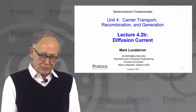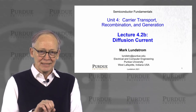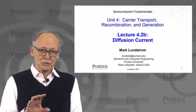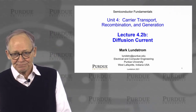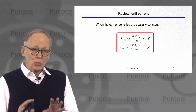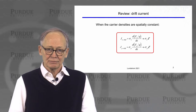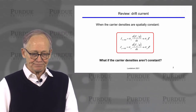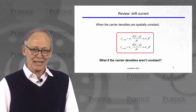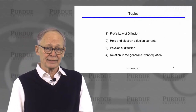Let's continue our discussion of current flow. We've talked about the general current equation and drift current, which is a special case where carrier densities are spatially uniform and current is simply proportional to the electric field. In this lecture we'll be talking about diffusion current, another special case where we assume there's no electric field but there could be a gradient in the carrier density.